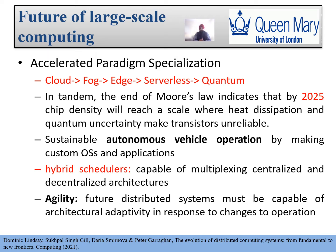The end of Moore's Law indicates that by 2025, chip density will reach a scale where heat dissipation and quantum uncertainty make transistors unreliable. Sustainable autonomous vehicle operations — by making custom operating systems and applications — present a challenge in terms of how we can make them more sustainable.